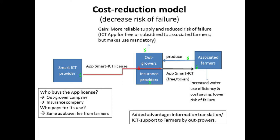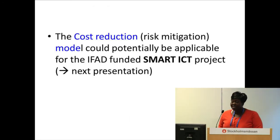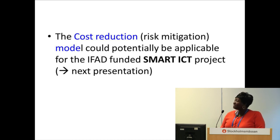Insurance companies are also important focal players. The more risk in terms of crop failure, the more claims you're going to have at the end of the season. It will make sense for entities like them to invest in technologies that would reduce risk, and this represents cost savings and profit generation for them. Similarly, this is a model that would make sense to consider for the Smart ICT project.